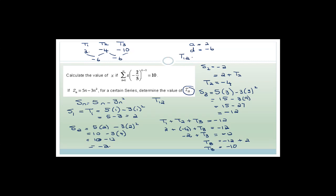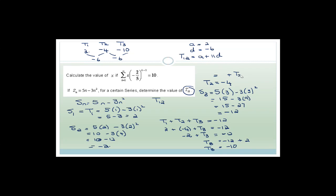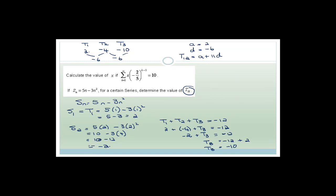We want T12 = a + 11d = 2 + 11(−6) = 2 − 66 = −64. So T12 equals −64.